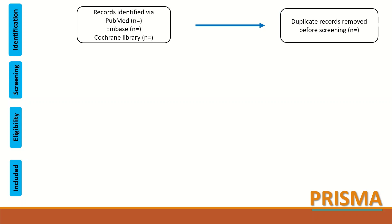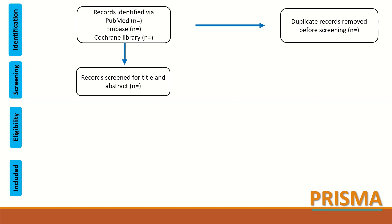The number of studies or records identified from those database searches has to be reported in the identification box. Any duplicates are then filtered out — duplicated studies will be removed before moving to the next step, which is screening.